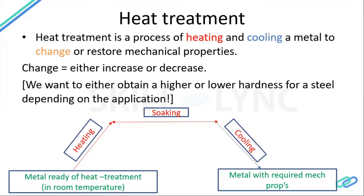The raw material for heat treatment is a piece of steel or metal whose hardness or other properties need to be changed. Industries give you that piece, and all you do is heat it, soak it, and cool it to get the required mechanical properties. The properties can be either increased or decreased depending on how you operate these three stages.